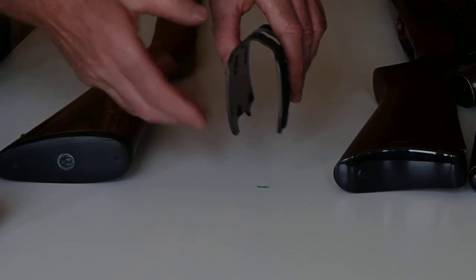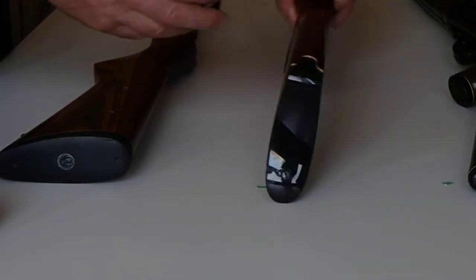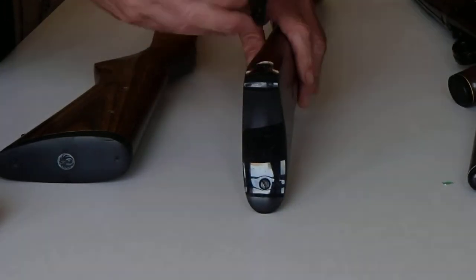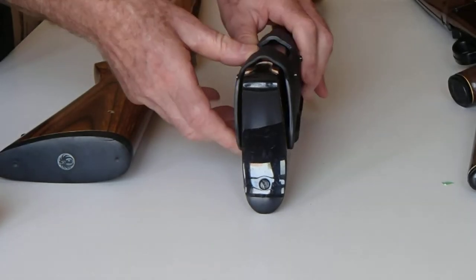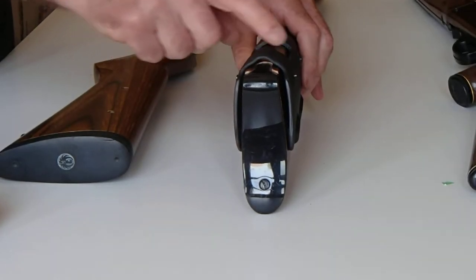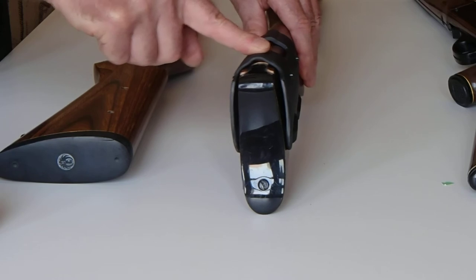The wide arch works on stocks that have a flat comb like this, by creating two points of contact to eliminate all movement.